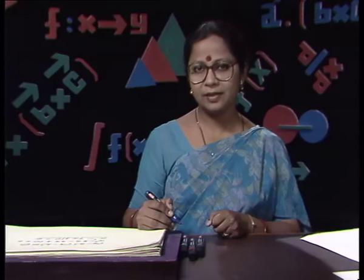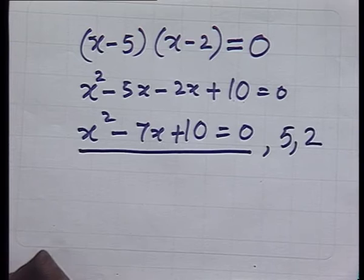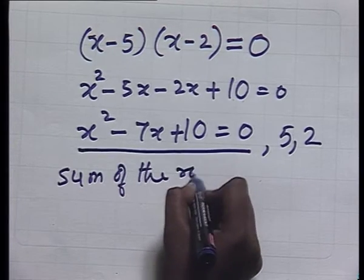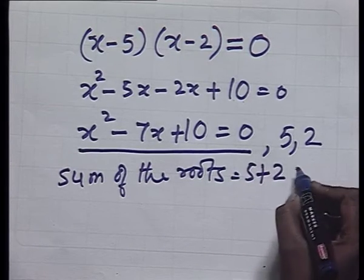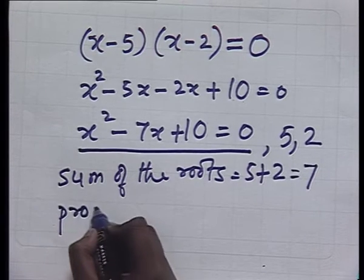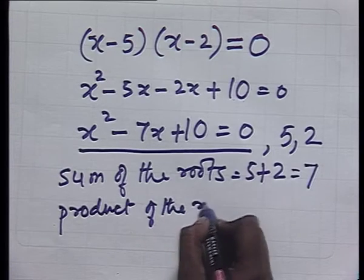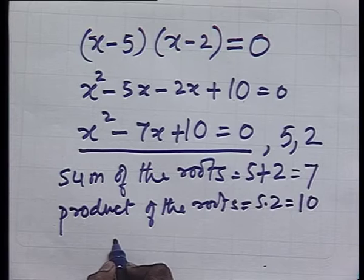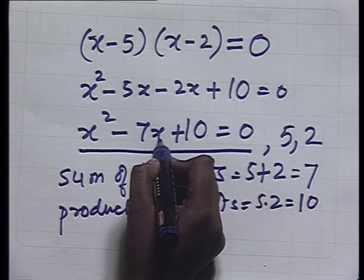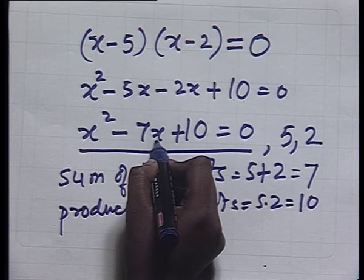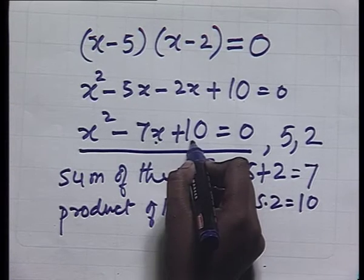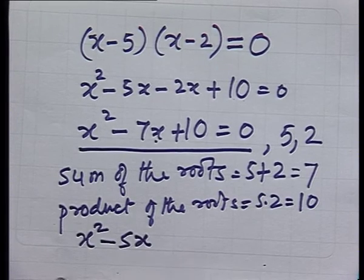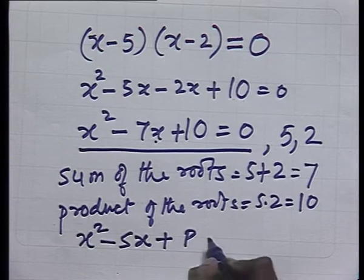Observe the equation x² - 7x + 10 = 0. The roots are 5 and 2. The sum of the roots is 5 + 2 = 7, and the product of the roots is 5 × 2 = 10. Notice that minus times the sum is the coefficient of x, that is -7, and the product of the roots, 10, is the constant term. So our equation becomes: x² - (sum of roots)x + (product of roots) = 0.